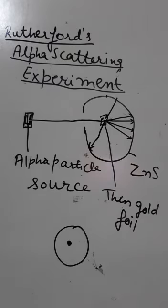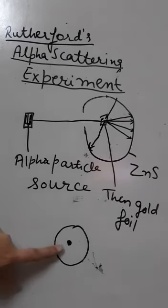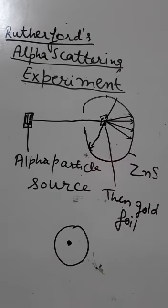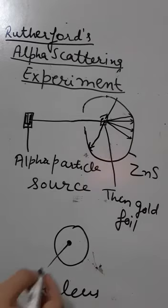According to this model, the center of an atom consists of a positively charged body that is called the nucleus. All protons and neutrons are present inside the nucleus.